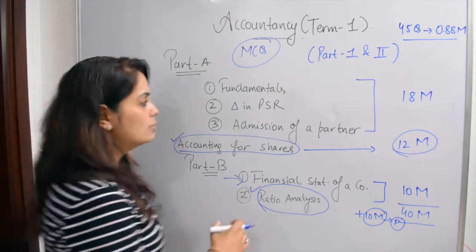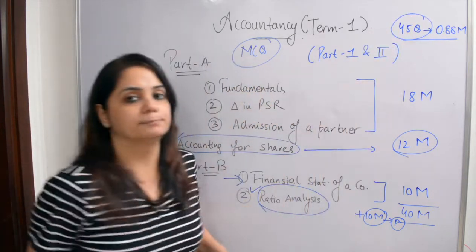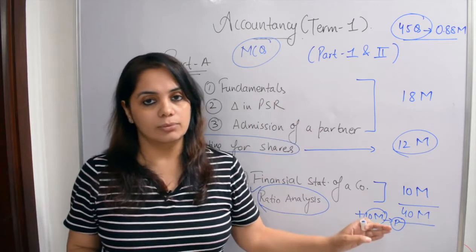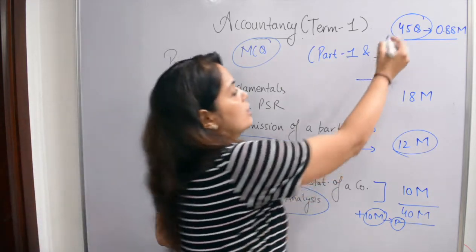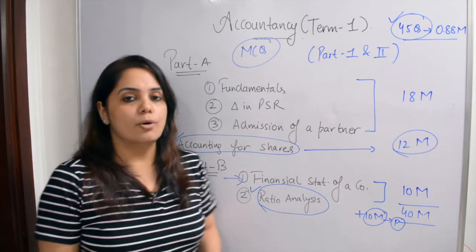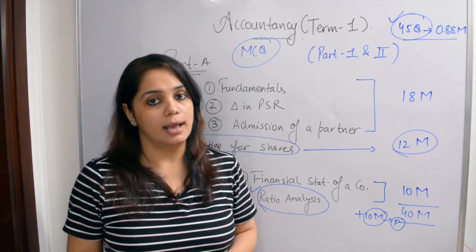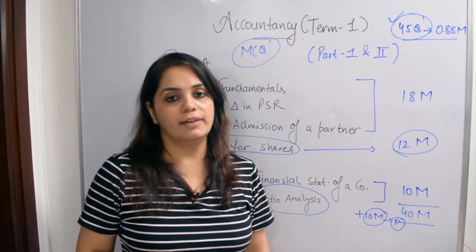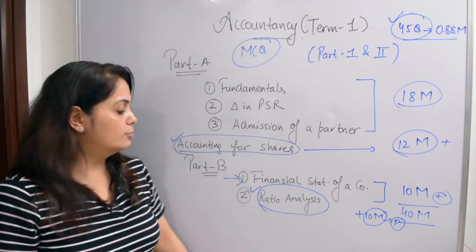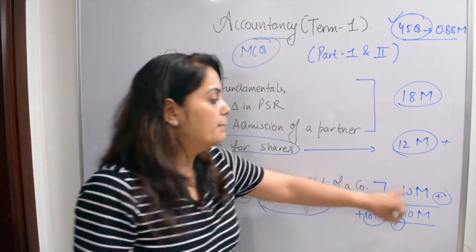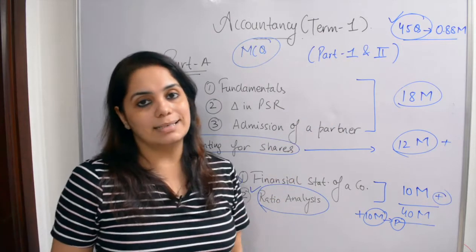You will have to attempt 45 questions in your accountancy exam. You might ask: the paper is of 40 marks, but how are there 45 questions? This is because it is divided as 18 plus 12 plus 10 marks — that is, ratio analysis and financial statements of a company — making a total of 40 marks. Since there are MCQs and you have to attempt 45 questions, there is a little twist: each question is worth 0.88 marks, and if you multiply it, you get 40 marks.